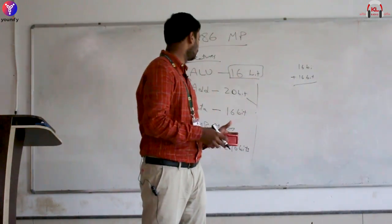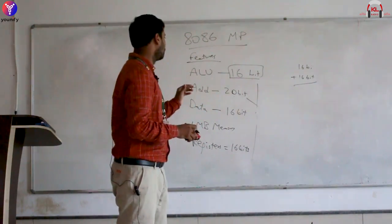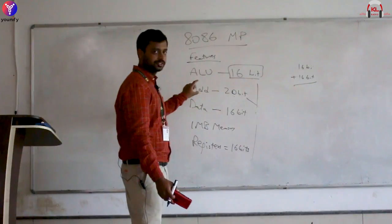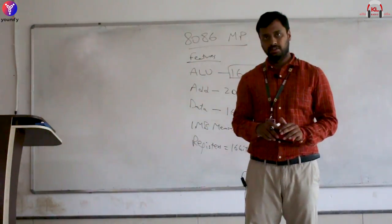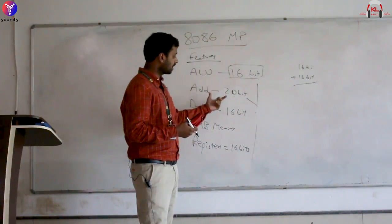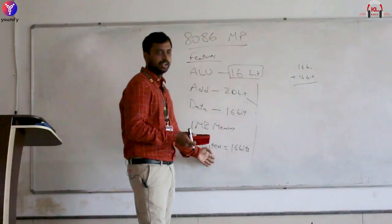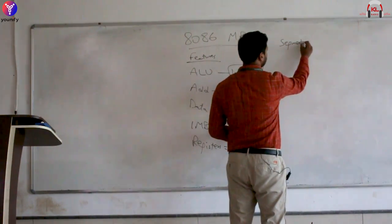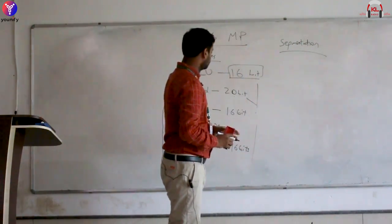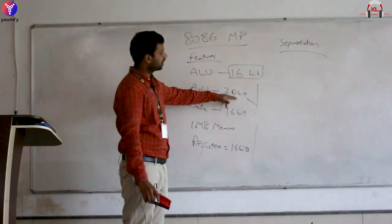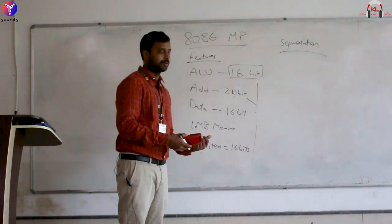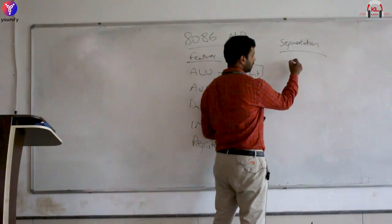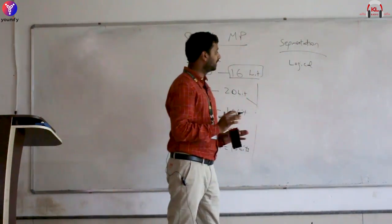The data bus fits in registers and transfers to the ALU for addition. The problem is the address bus is 20 bits, but registers are only 16 bits, so we can't store a 20-bit address in a 16-bit register. To solve this, we use a logical method called segmentation. Segmentation divides the whole memory into parts. These divisions are not physical — they are purely logical segments.